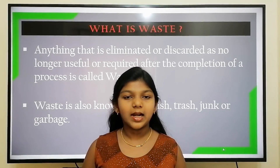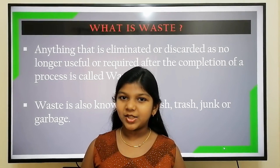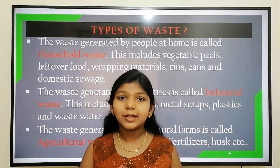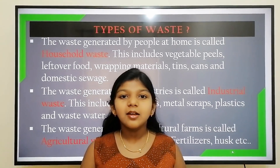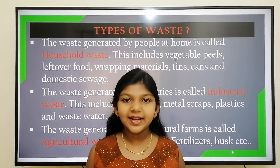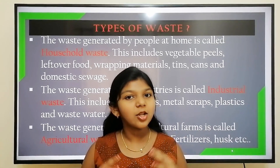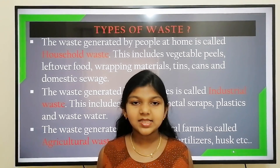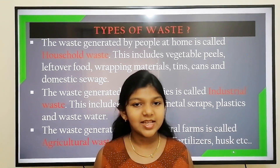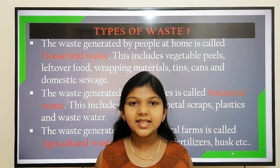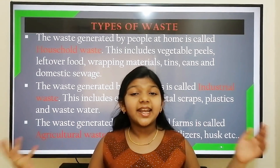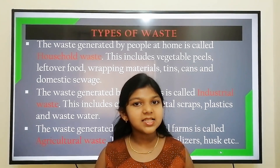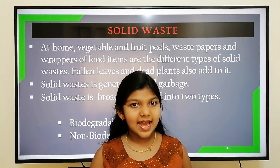Waste is also known as rubbish, trash, junk, or garbage. Now let's see the types of waste. The waste generated by people at home is known as household waste — this includes vegetable peels, leftover food, tins, cans, and domestic sewage. The waste generated by industries is known as industrial waste — this includes chemicals, wastewater, metal scraps, and plastic. The waste generated on an agricultural farm is known as agricultural waste, which includes fertilizer and husk.